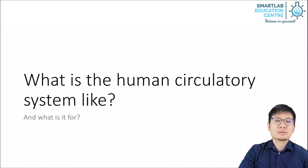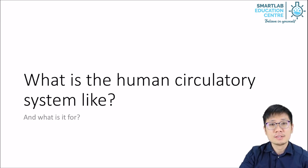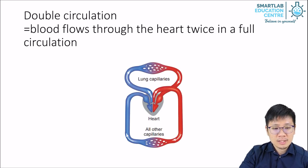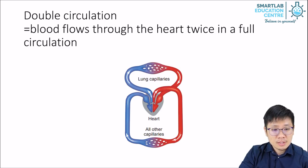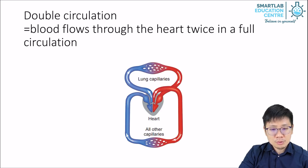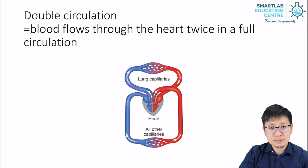We're going to discuss the rough layout of the human circulatory system, what it is like and why we have such a circulatory system. The human circulatory system is a double circulatory system. That means blood flows through the heart twice in a full circulation.